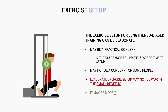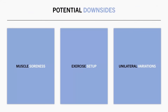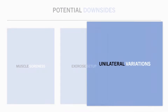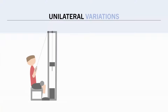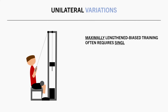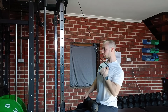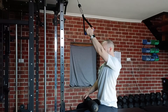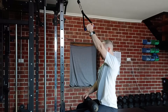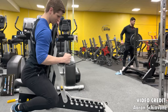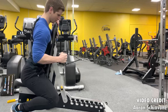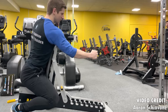In many cases, it may be a better trade-off to simply perform the exercise with a simpler setup. On a similar note, another potential downside of lengthened-biased training is that unilateral variations are often required. To train a muscle in its most lengthened state, we sometimes need to perform single-arm or single-leg exercises. For example, to achieve maximal stretch on some of the back muscles, the arms need to be moved across the body, requiring unilateral rows and pull-downs to achieve the extra stretch that we don't get from bilateral back exercises.